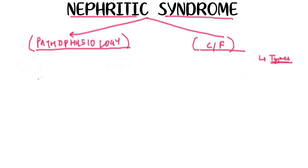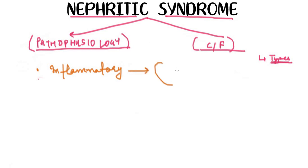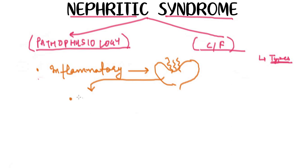The nephritic syndrome is essentially an inflammatory process in which the inflammation will take place in the glomerulus. So here is the glomerulus, and in the nephritic syndrome the inflammation will take place in the glomerulus.